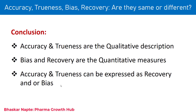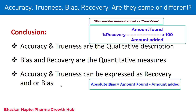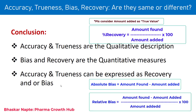The percent recovery is calculated as: amount found divided by amount added, multiplied by 100. The bias can be expressed as an absolute difference: amount found minus amount added. Or if you want to calculate the relative bias, it is: (amount found minus amount added) divided by amount added, multiplied by 100 — that gives you the relative bias.